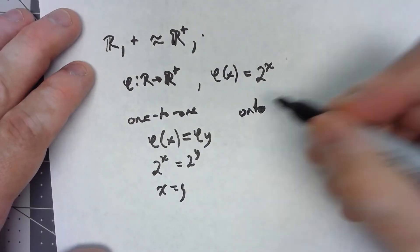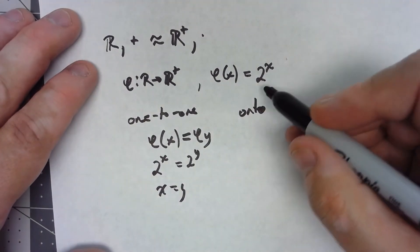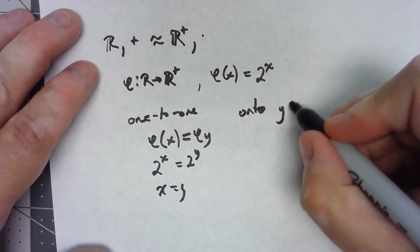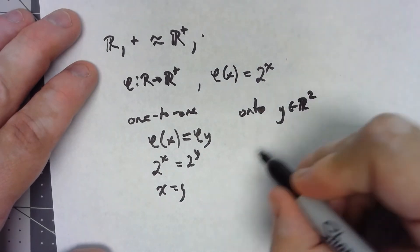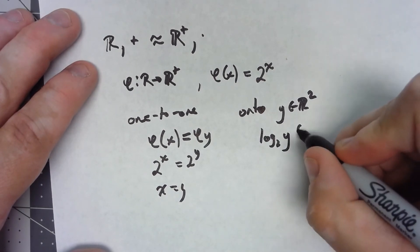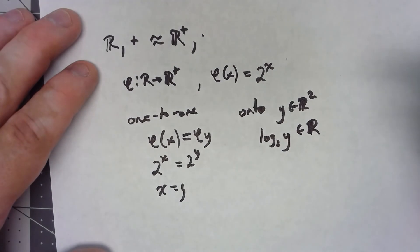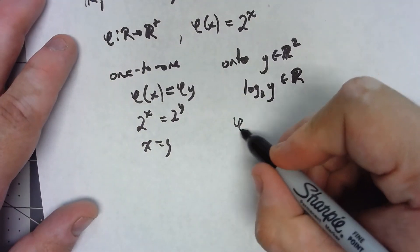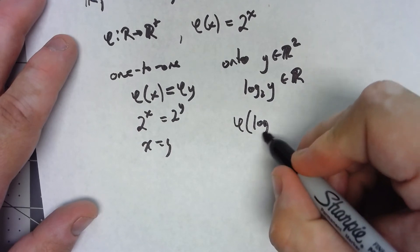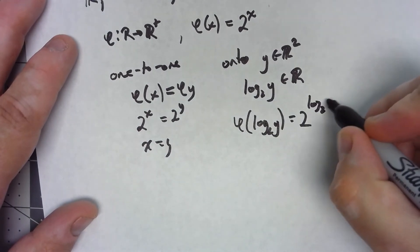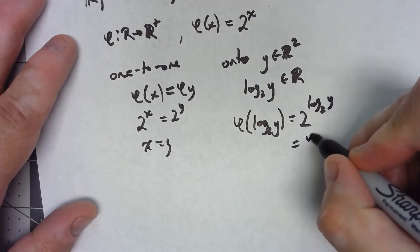It's onto, since for any element of R+, the log base 2 of y is going to be some real number. And if I do phi of log base 2 of y, that's 2 to the log base 2 of y, and that's going to be y.